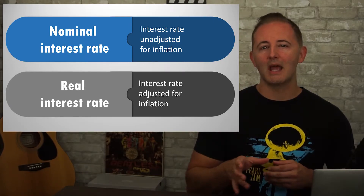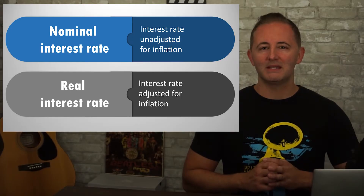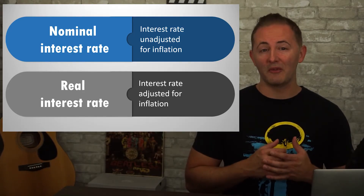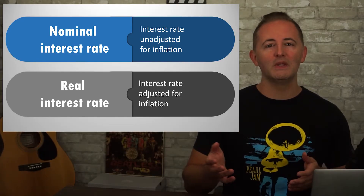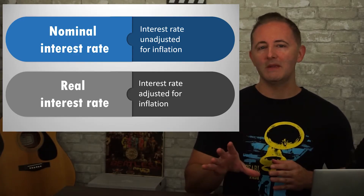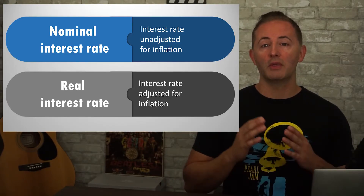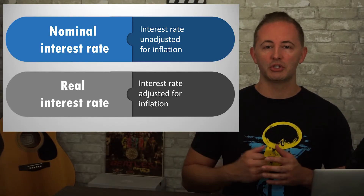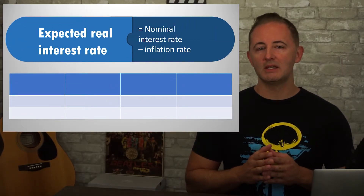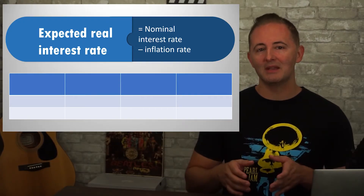The real interest rate is calculated by accounting for inflation. But that's the tricky part — nobody knows what inflation will be in the future. If you did, you'd be sitting on a pile of Breaking Bad money. This means that expectations about future inflation are going to determine the nominal interest rate. Basically, it goes like this: the expected real interest rate is equal to the nominal interest rate minus the expected inflation rate.